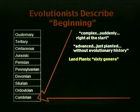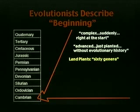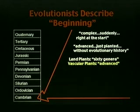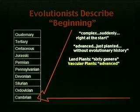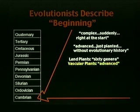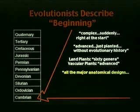We find land plants, and many of the earth science textbooks will tell us that during the Cambrian there's nothing but shallow seas everywhere. Well, if you've got 60 genera of land plants, that's obviously not the case. In fact, there are six groups of vascular plants described as advanced in the literature. Vascular plants are like trees, the woody types. Obviously, there has to be land somewhere. This is what we find in this lowest part.